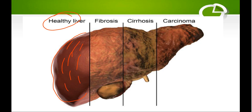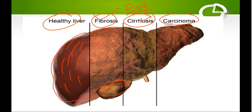After inflammation, collagen deposition begins and the liver's architecture starts to get disturbed — this is fibrosis. After fibrosis, when that fibrosis becomes extensive, it will be referred to as cirrhosis. Then, from autonomous cell proliferation, carcinomas begin to develop — hepatocellular carcinoma.